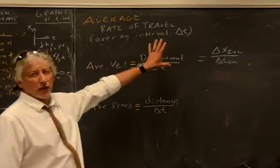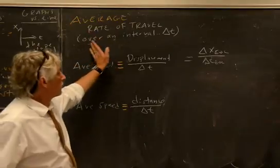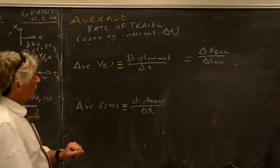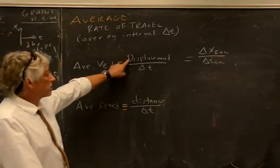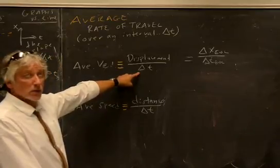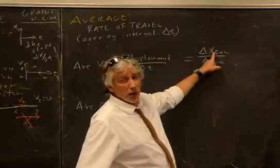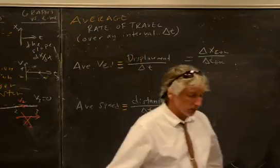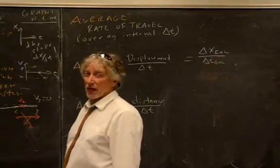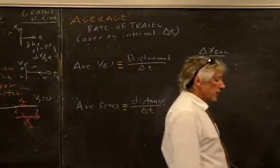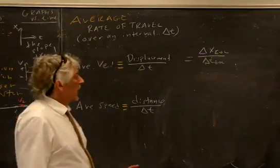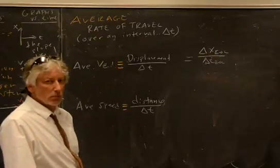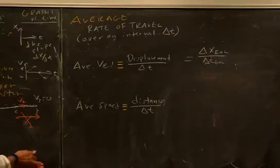Looking at average rate of travel over an interval — not at an instant — you have to be careful. You can't do averages in the normal way most of the time. Average velocity is defined as displacement over time. If I run around in a circle and end up at the same place, my displacement is zero, so my average velocity is zero. You cannot do (v_earlier + v_later)/2 except for constant acceleration.